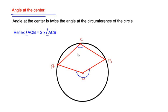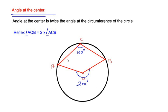For example, if the angle at the circumference is 100 degrees, then the reflex angle AOB is going to be two times the angle at the circumference, hence it is going to be 200 degrees. So let us use this theorem to solve the example.